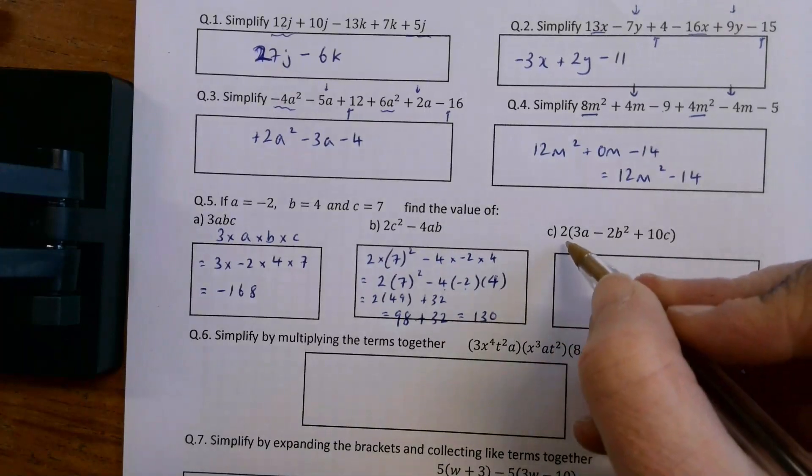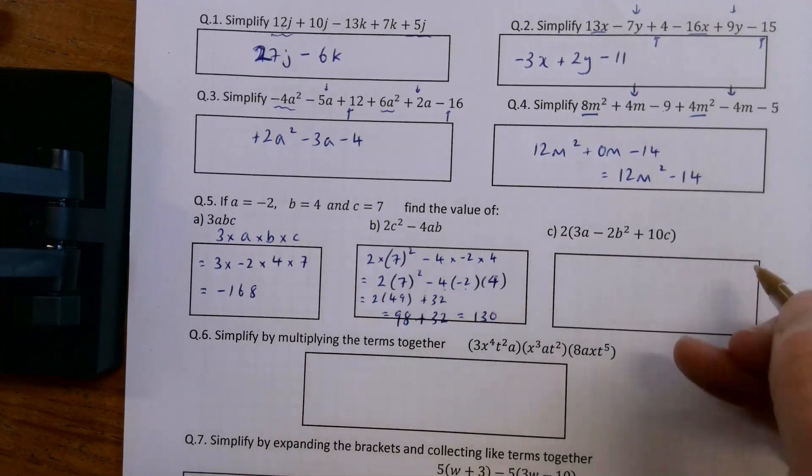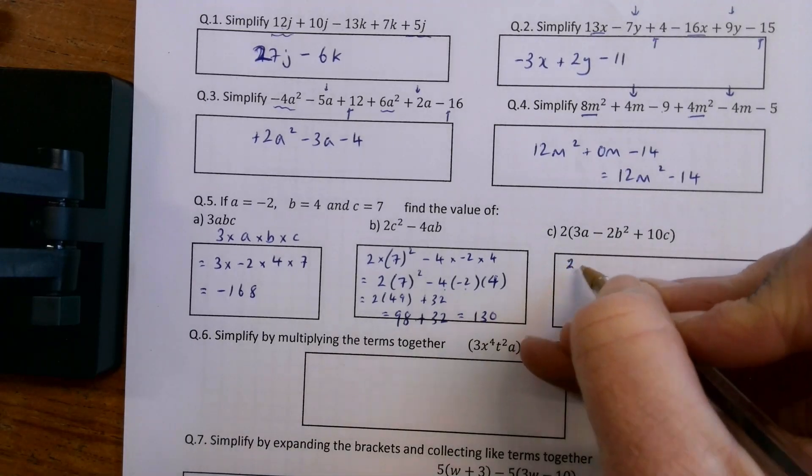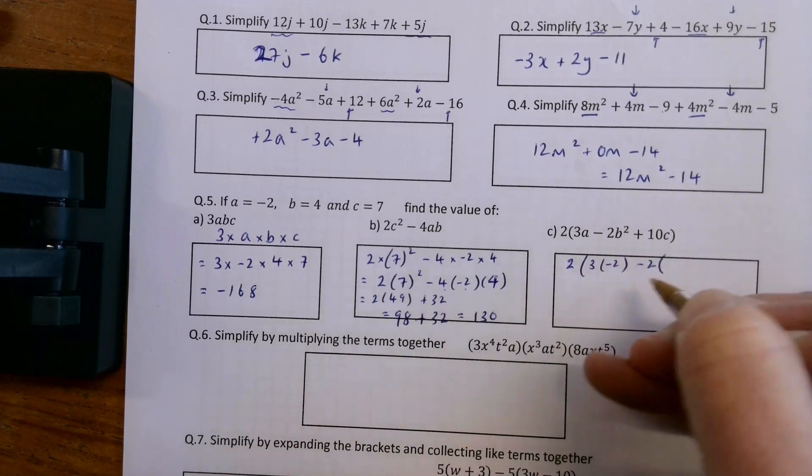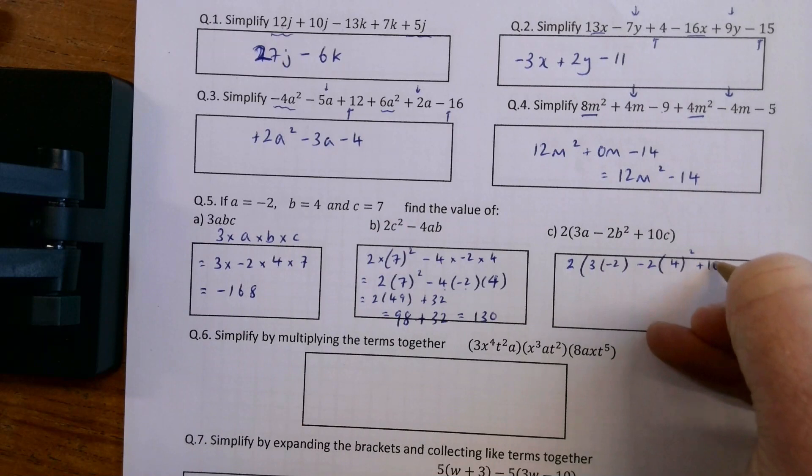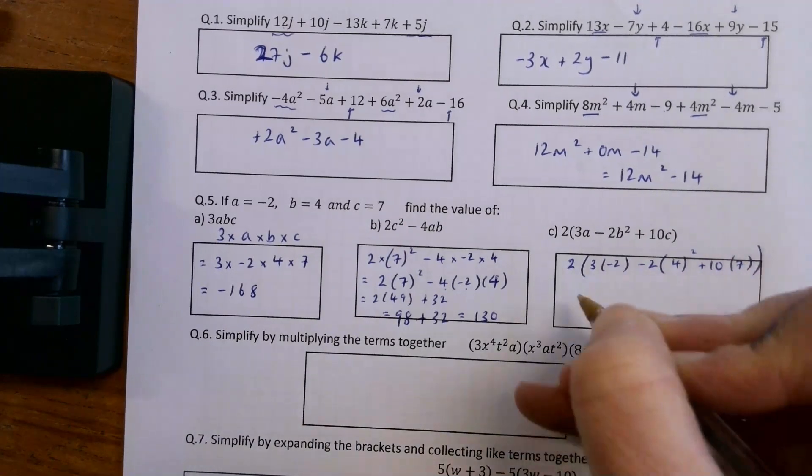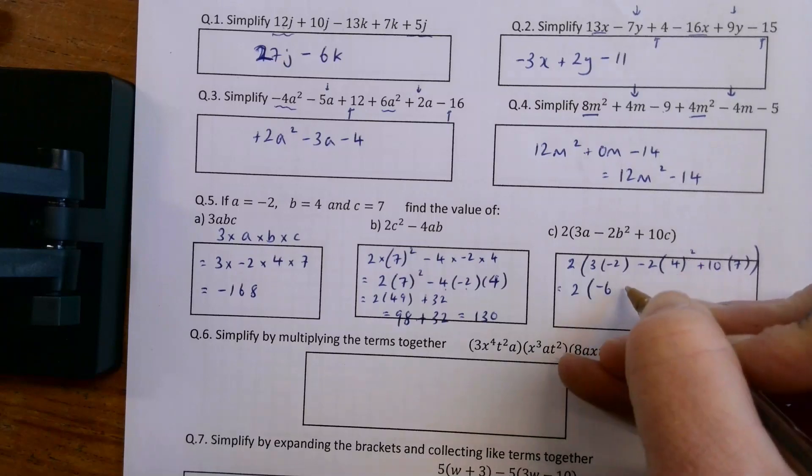And then twice 3A minus 2B squared plus 10C. So this is a bit nasty. So 2 by 3A, 3 times minus 2, minus 2 times B squared, so 4 squared, plus 10 times C, so 10 times 7. So 2 times minus 6, minus 2 times 16, plus 70.